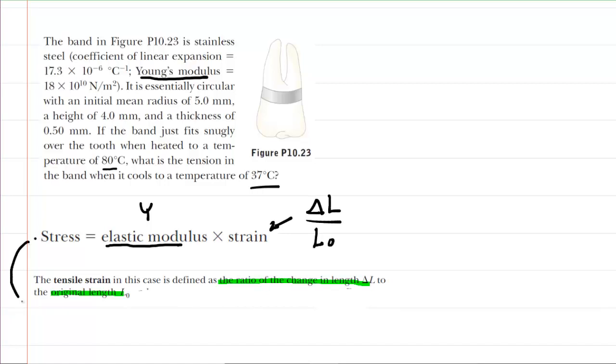So we know that this strain quantity can be rewritten as a change in length divided by the original length. So what we're going to do is take these ideas and rewrite an equation for stress. And this is going to be the stress that is developing within the band itself.